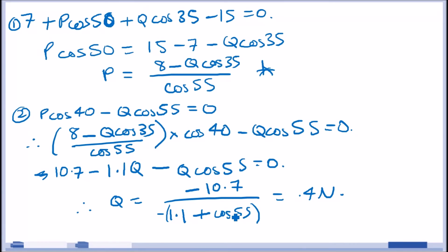And, of course, substitute 6.4 into P. So, again, just replace Q with 6.4. P should equal 8 minus 6.4 cos 35 over cos 50. And that's it, guys. You should get about 9.9, about 10.0 Newtons. And that's it.